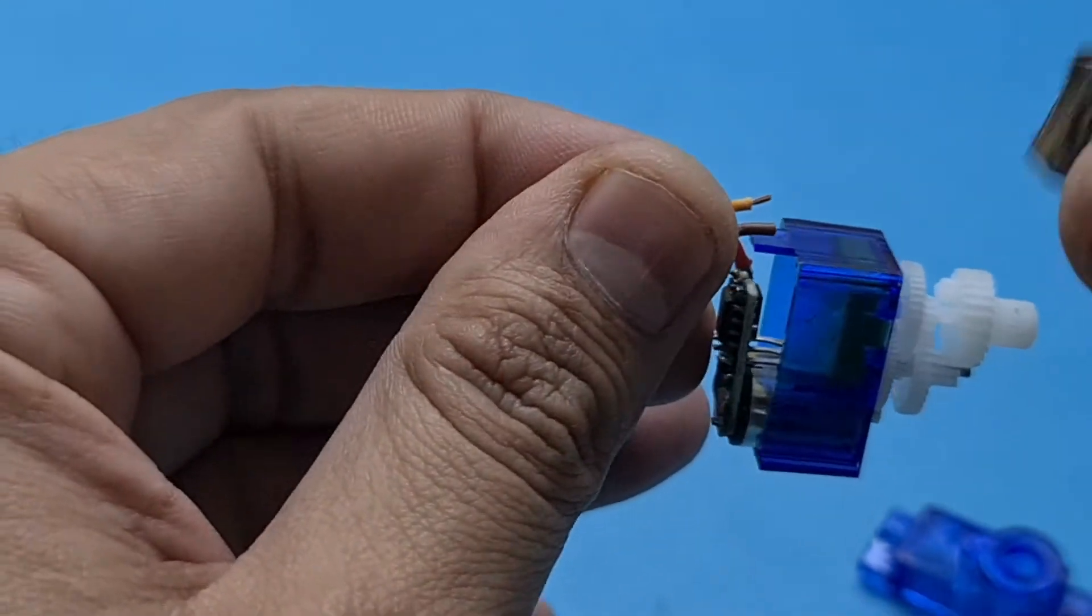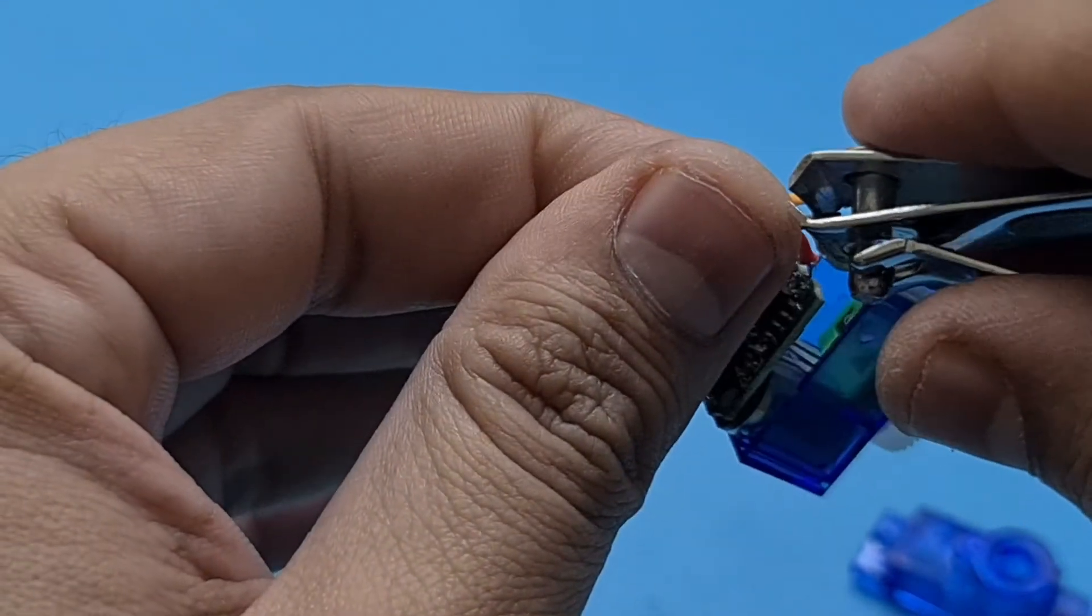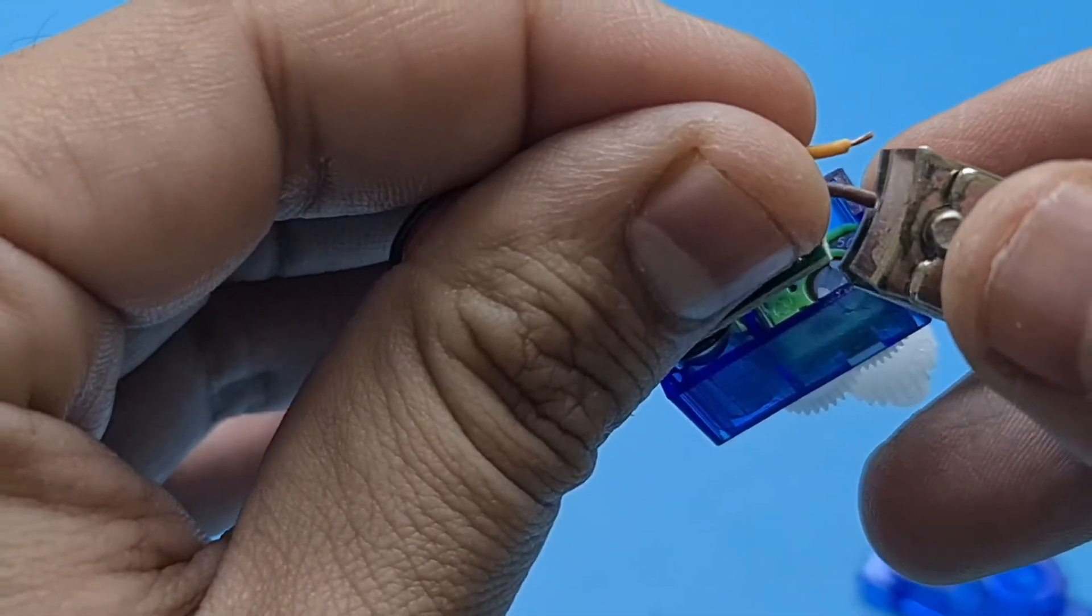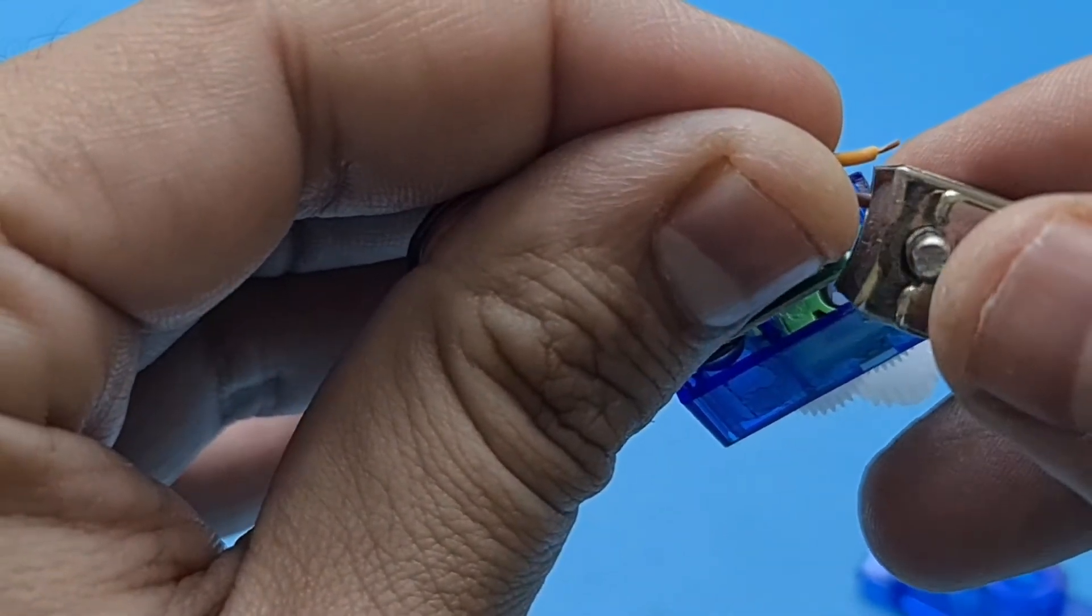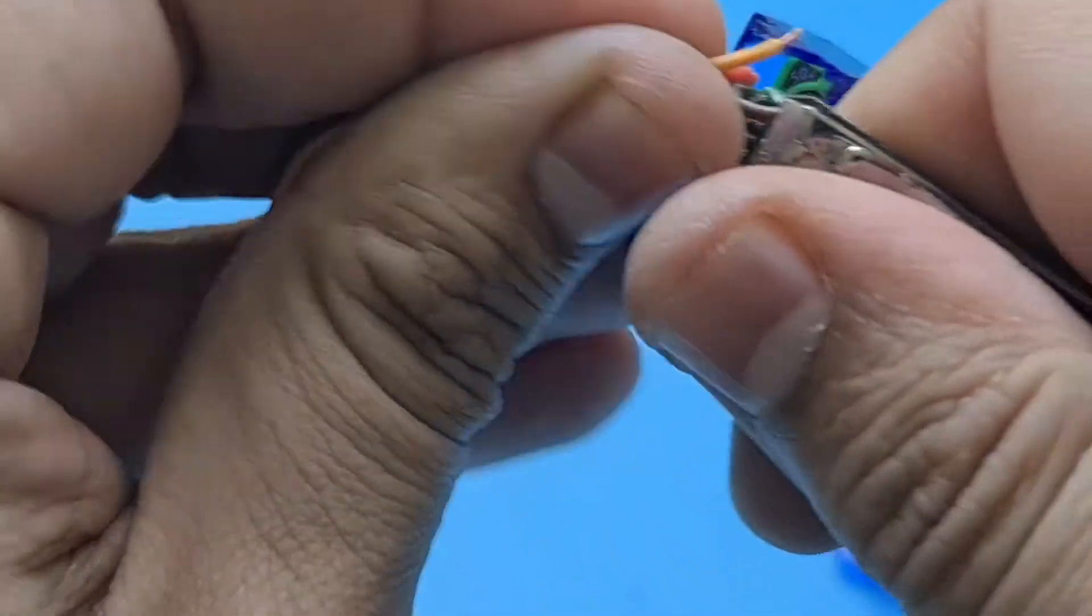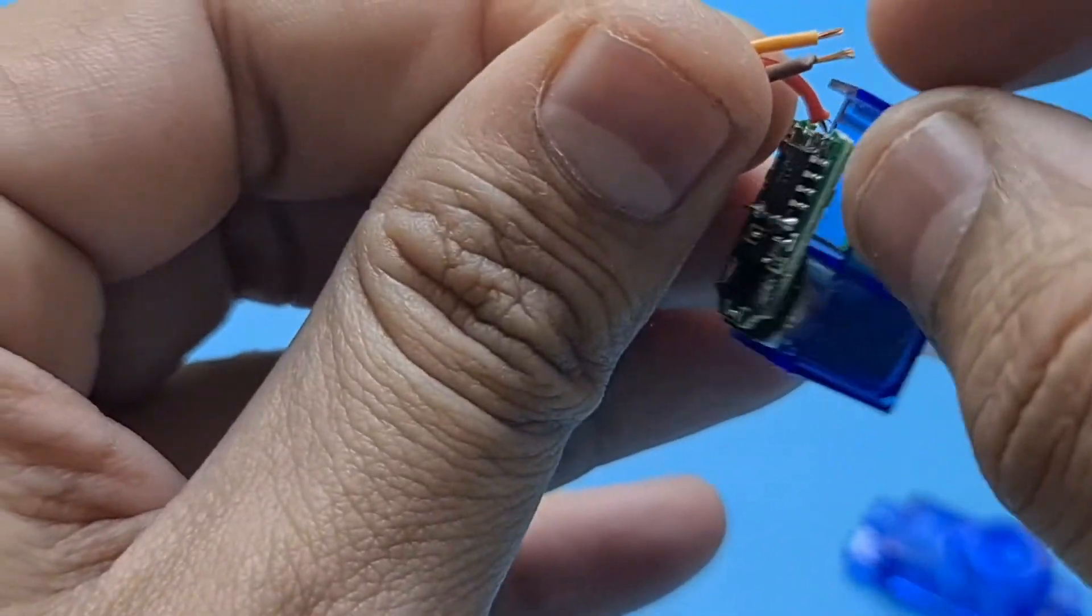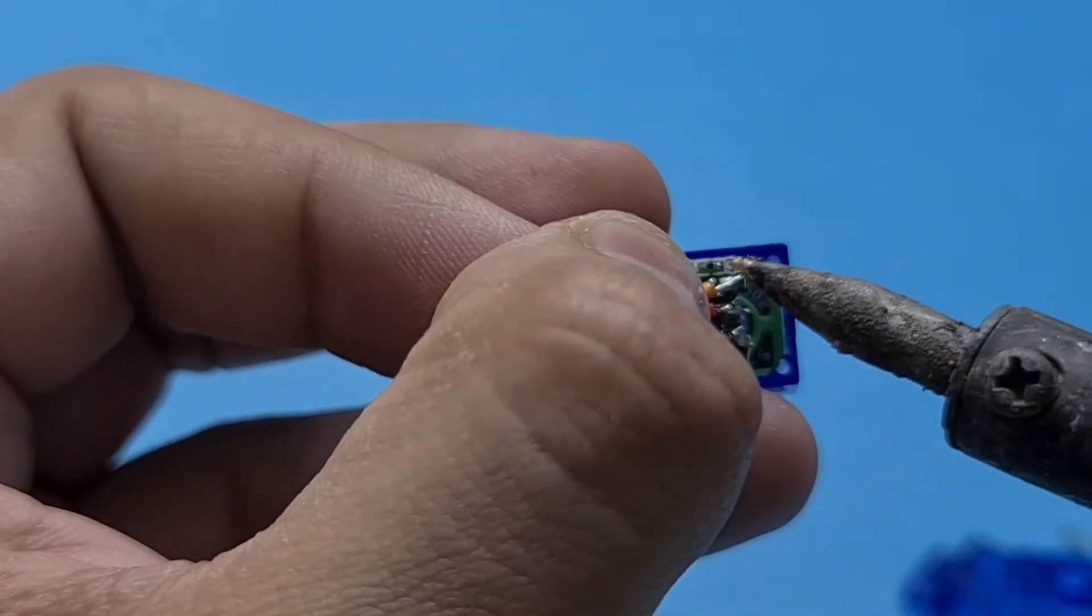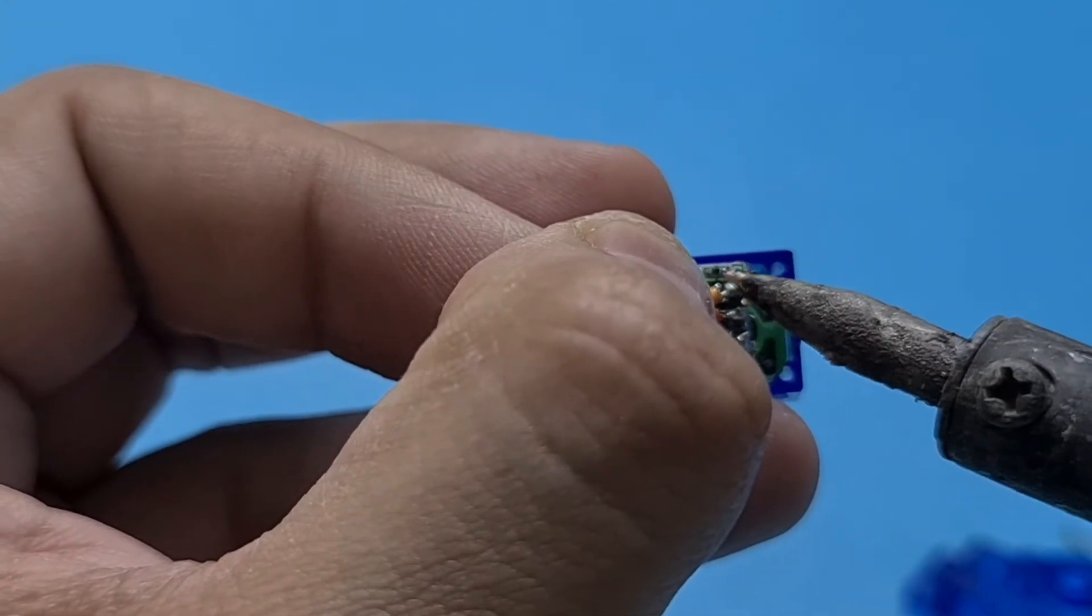Gently remove the wire insulation. Be careful, as pressing too much can cut the entire wire. Once the insulation is removed, pre-tin the wire ends using your soldering iron and connect them with the circuit board.